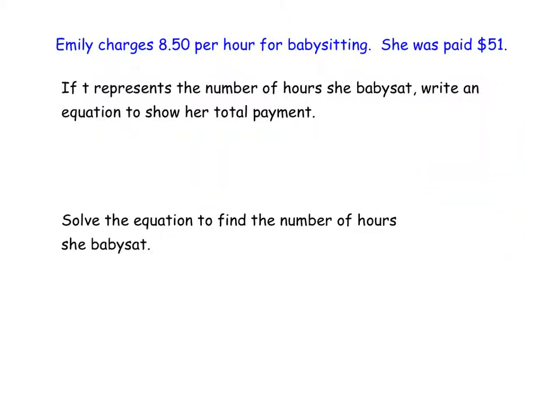All right, this one is very similar, except we're talking about babysitting. So if you make $8.50 per hour, how many hours would you have to babysit to get $51? So again, 0 hours, 0 dollars. One hour, so this is the number of hours, and this is the, so I guess we're going to use T for time, and this is the amount, or total payment, or amount. After one hour, she had $8.50. After two hours, she would have double that amount, so $17. And it goes up by $8.50 each time.